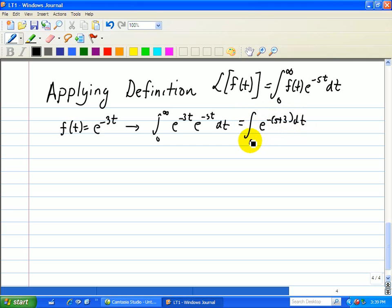Well, this looks familiar from the previous example we did in terms of a constant, so this is just equal to negative 1 over s plus 3, e to the minus s plus 3, evaluated from zero to infinity.